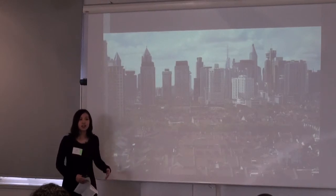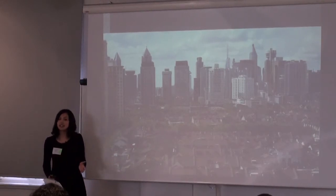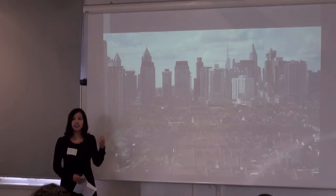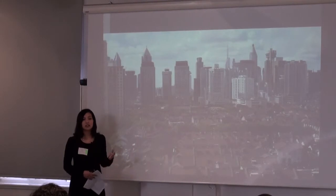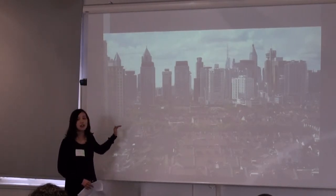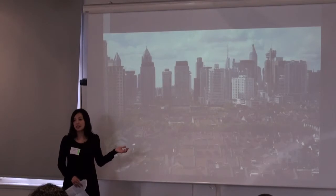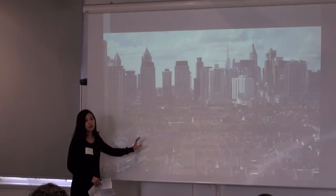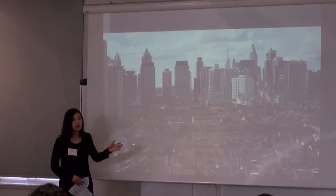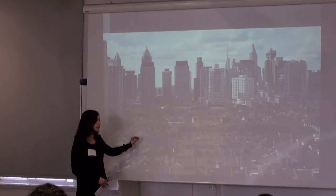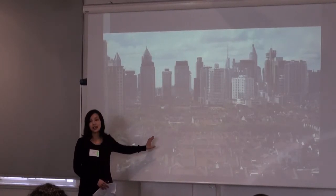The villagers inside used to be farmers working on their farmland. However, as the city expands so quickly, their farmland was acquired for urban development. So without income resources, many villagers chose to build upon their original houses and rely on rental collections in order to make a living. Because all the houses were constructed by the villagers themselves without compliance with housing regulations or planning rules, the environment inside the urban village can be quite chaotic.